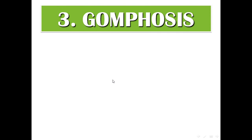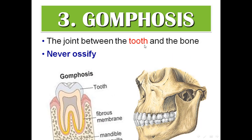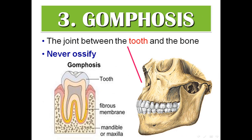The third fibrous joint type is gomphosis, which is the joint between the tooth and the bone, and it never ossifies.